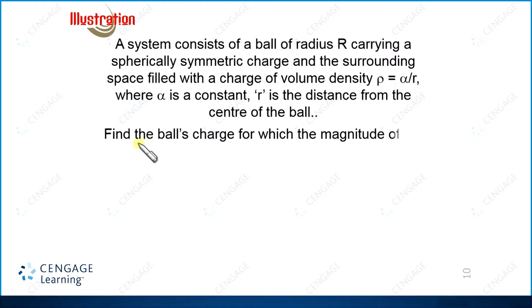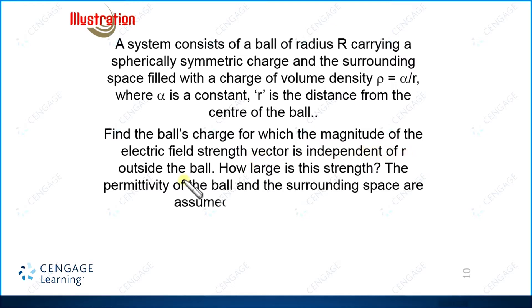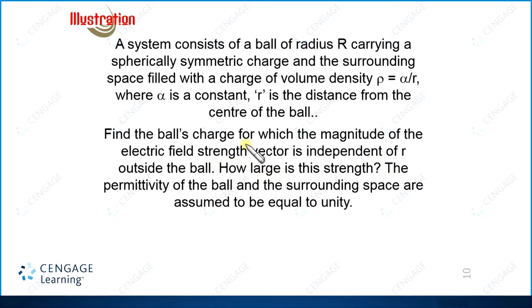In the next part of the question, it is given: find the ball's charge for which the magnitude of the electric field strength vector is independent of R outside the ball. We need to calculate the charge of the ball for which the electric field outside the ball is independent of the distance of the point under consideration from the center of the ball. It is also asked to find the strength of the electric field — this electric field will be constant if it is independent of R. The permittivity of the ball and surrounding spaces is assumed to be equal to unity.